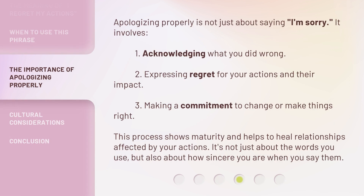Apologizing properly is not just about saying 'I'm sorry.' It involves: one, acknowledging what you did wrong; two, expressing regret for your actions and their impact; three, making a commitment to change or make things right. This process shows maturity and helps to heal relationships affected by your actions. It's not just about the words you use, but also about how sincere you are when you say them.